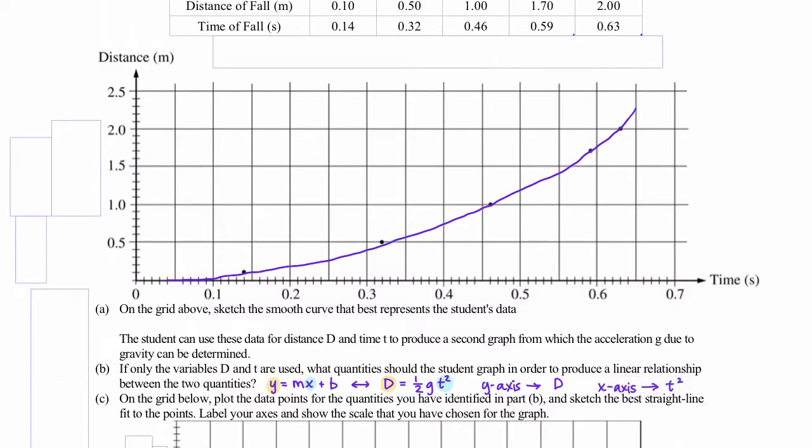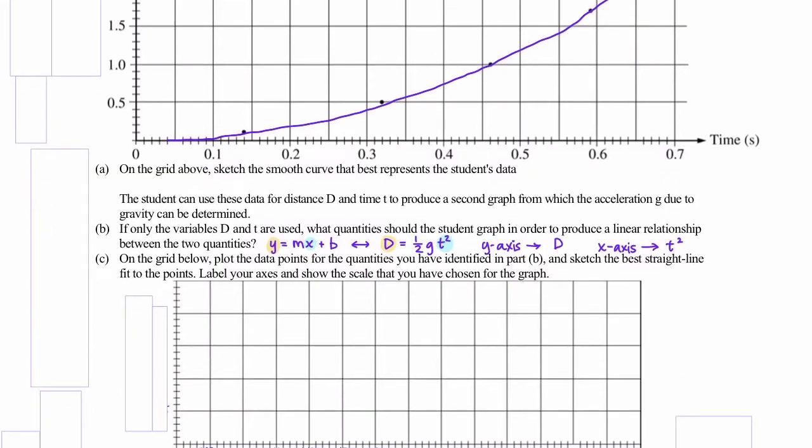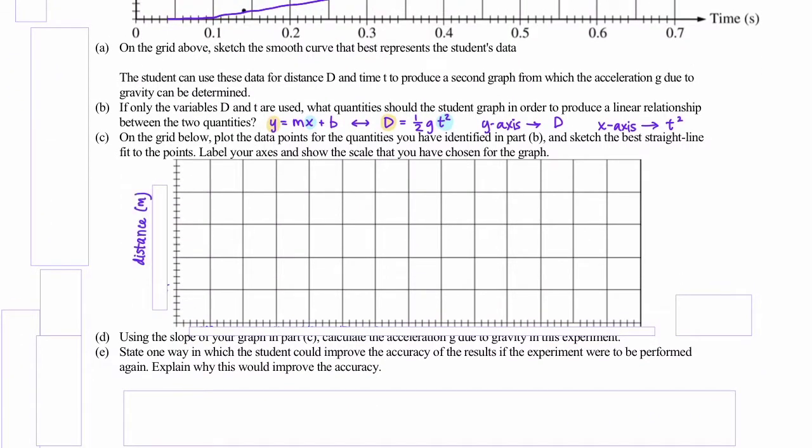On the grid below, plot the data points for the quantities you have identified in part b and sketch the best straight-lined fit to the points. Label your axes and show the scale you have chosen for the graph. So down below, we can label the vertical direction as distance in meters. And on the x-axis, we're going to plot time squared, which has units of seconds squared.